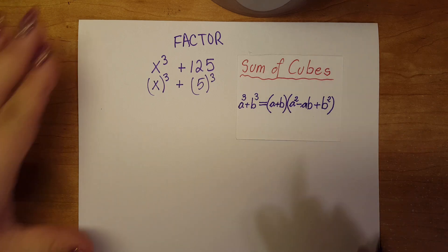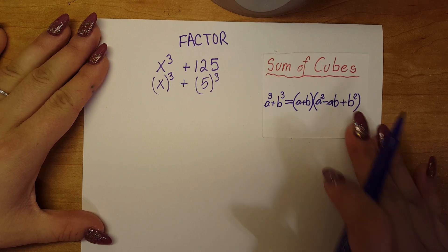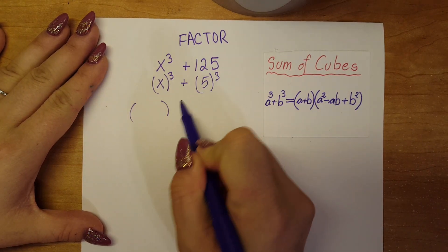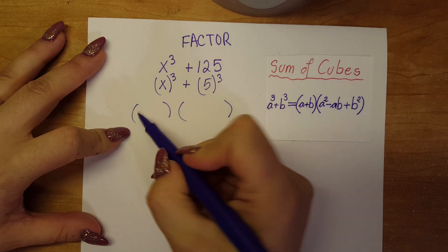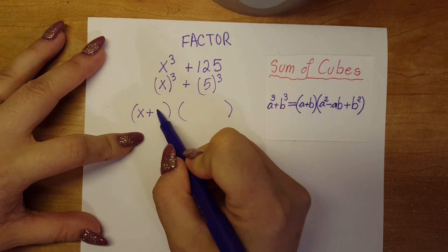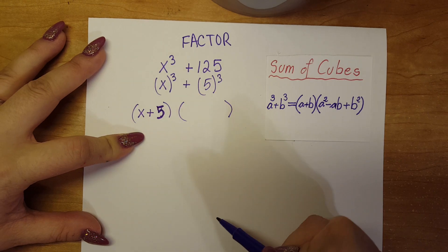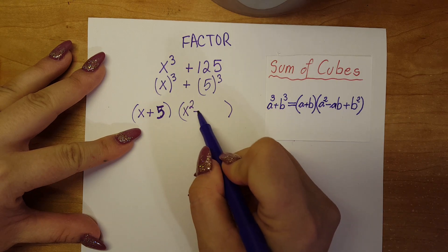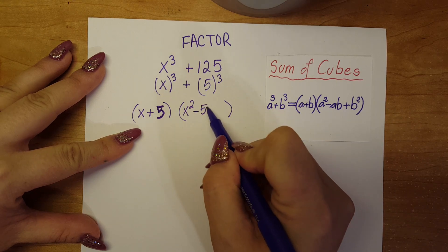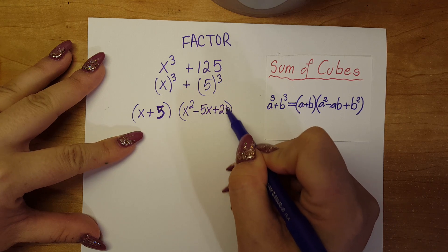So basically when we're factoring this out, this breaks down into two sets. Our a here represents x, so we have x plus 5, and now we have x squared minus 5x plus 25.